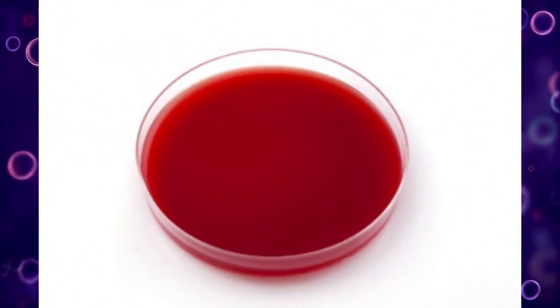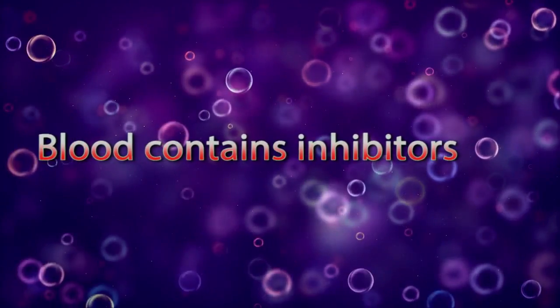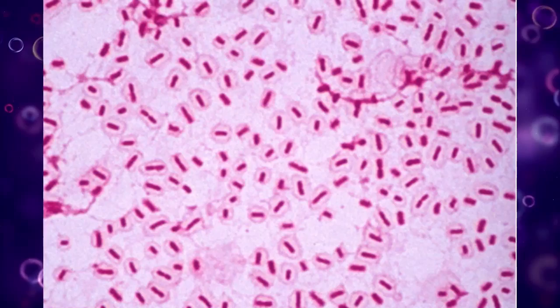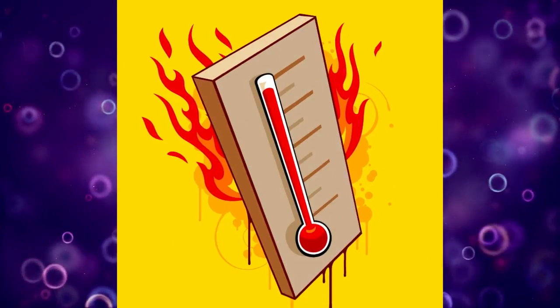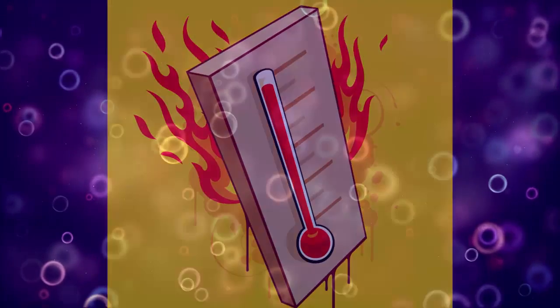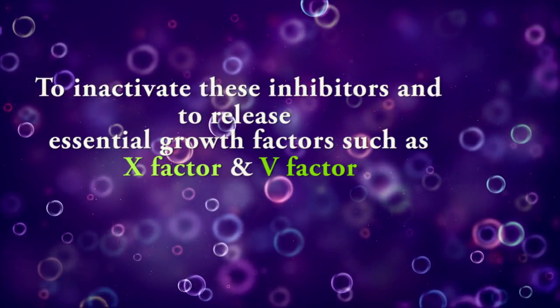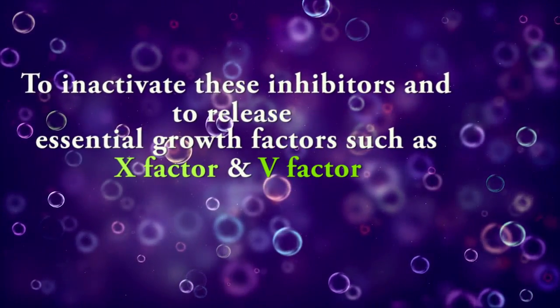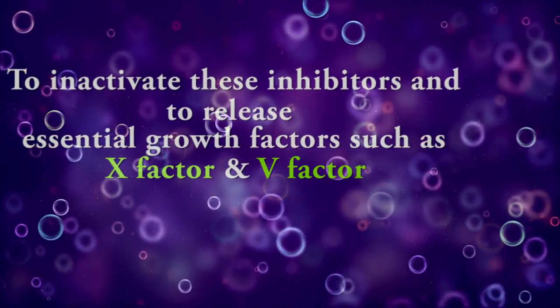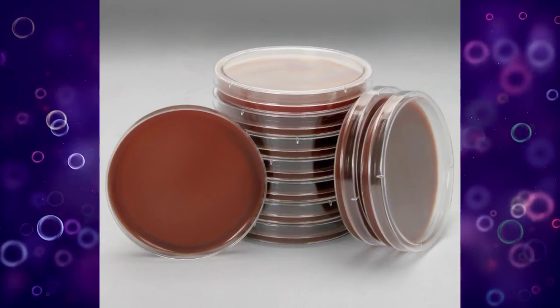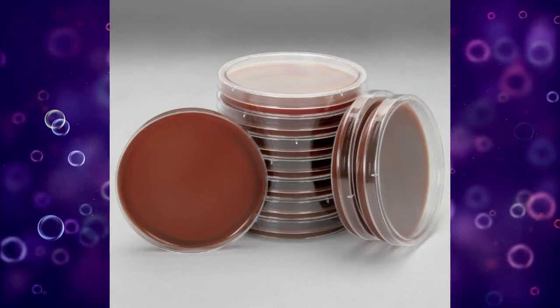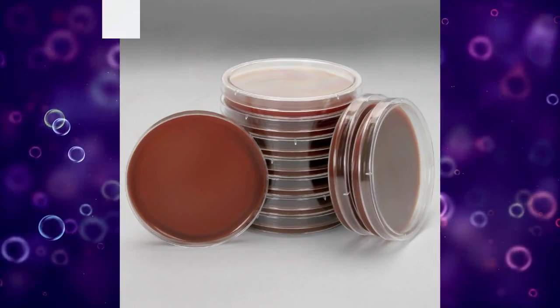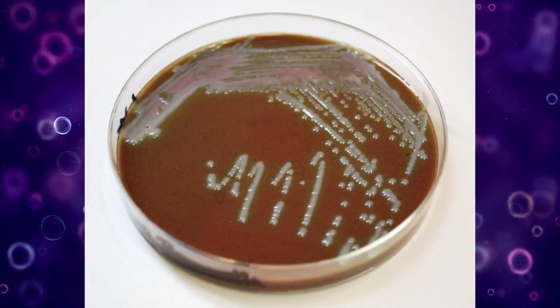Blood contains inhibitors for certain bacteria such as Neisseria and Haemophilus genera, and the blood agar must be heated to inactivate these inhibitors and to release essential growth factors such as X factor and V factor. Heating blood agar converts it into chocolate agar, which supports the growth of these bacteria.